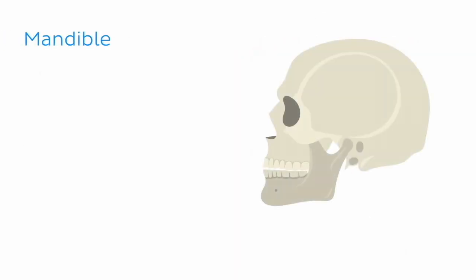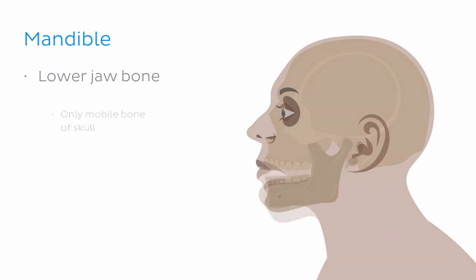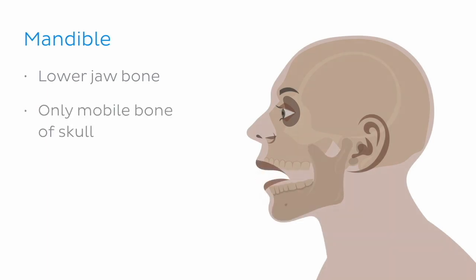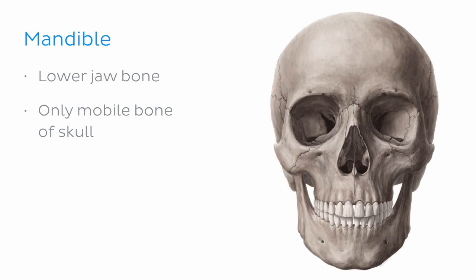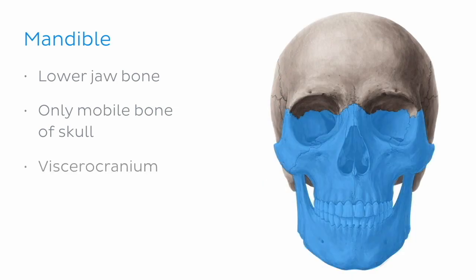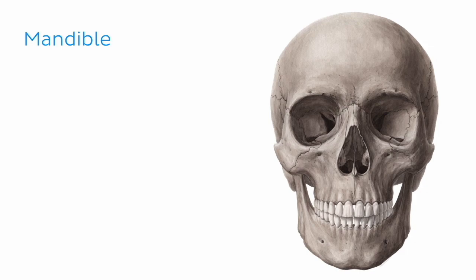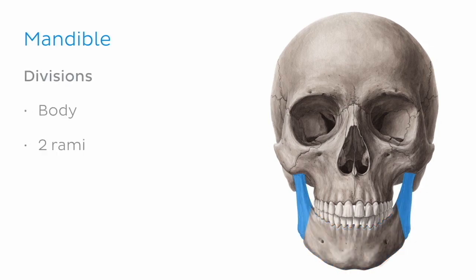As you can see here, the mandible is our lower jaw bone. It is the largest, strongest, and lowest bone of the human skull. It is the only mobile bone of the skull, apart from the auditory ossicles. The mandible is often considered to be a part of the viscerocranium. However, in some literature, it is not included as part of the facial skeleton. The mandible consists of a body anteriorly and two rami posteriorly.